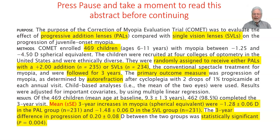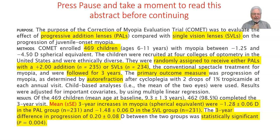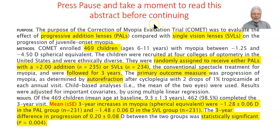The COMET study compared the standard of care — single vision lenses, plain corrective lenses for kids with myopia — against progressive addition lenses (PALs). PALs are like bifocals that add a little plus in the bottom portion for reading while correcting distance at the top. The study ran children ages six to eleven. Please press pause now and take a moment to read the abstract.